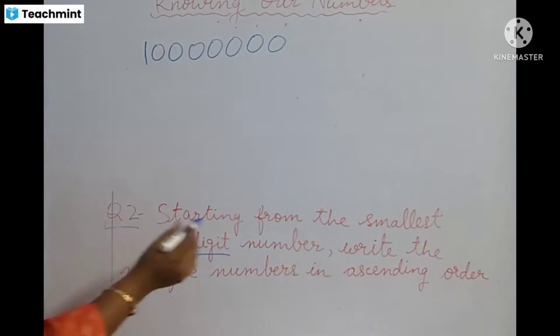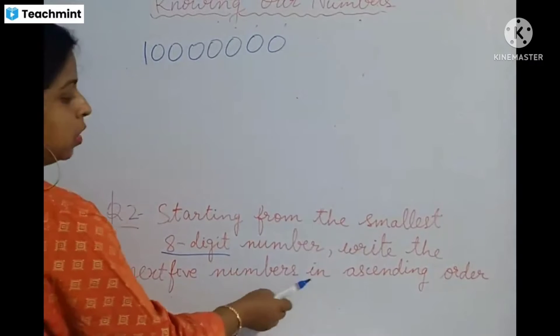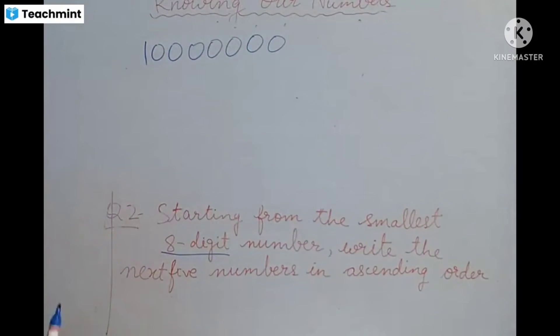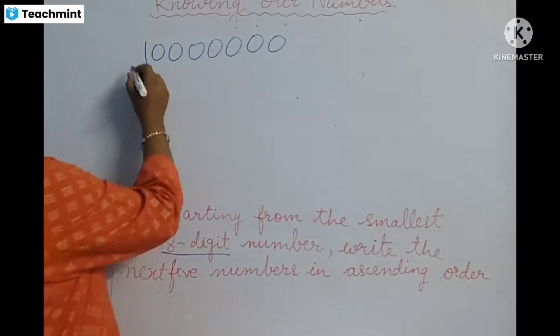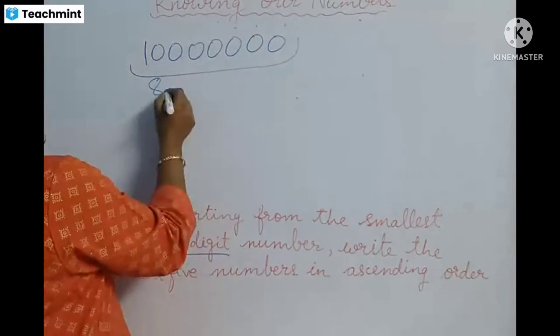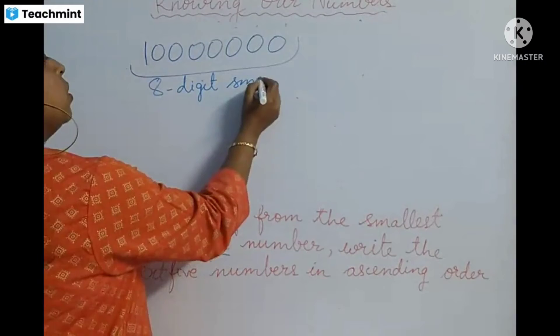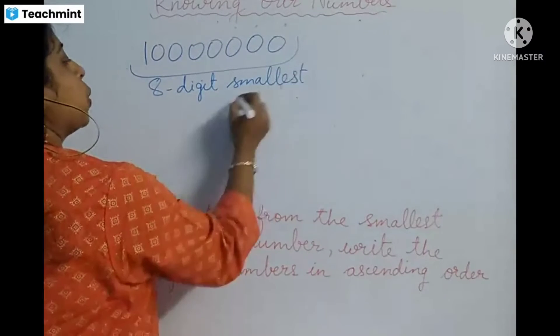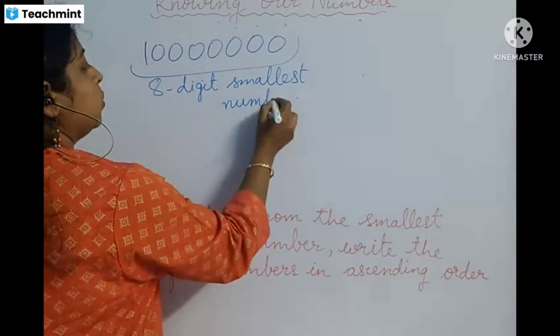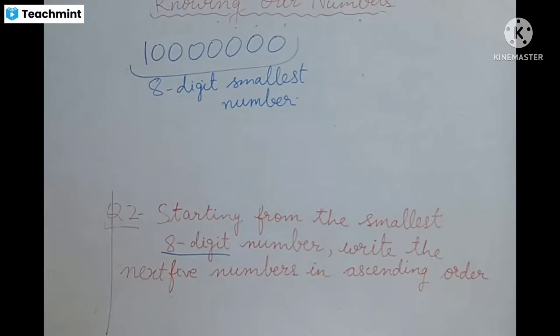Write the next 5 numbers in ascending order. This is the 8 digit smallest number. Okay? Now, this is 8 digit smallest number.